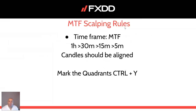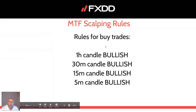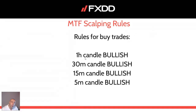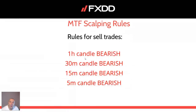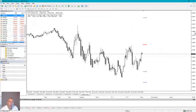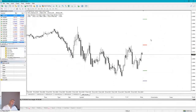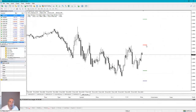Regarding MTF scalping rules, we use the MTF time frame. We drill down from one hour to 30 minutes, 15 minutes, and five minutes. Candles should be aligned. First, you need to mark the quadrants. Rules for buy trades: the one-hour candle should close bullish, the 30-minute candle should close bullish, the 15-minute candle should close bullish, and the last five-minute candle of that hour should be bullish. If you miss the top of the hour, you can watch these candles during that hour — they need to be aligned. For sell trades, the one-hour candle is bearish, 30-minute candle bearish, 15-minute candle bearish, and five-minute candle bearish. I will also use ATR pivots, which I'll explain later. You'll be using naked trading here, but for ATR scalping I will show you how to use ATR for scalping.